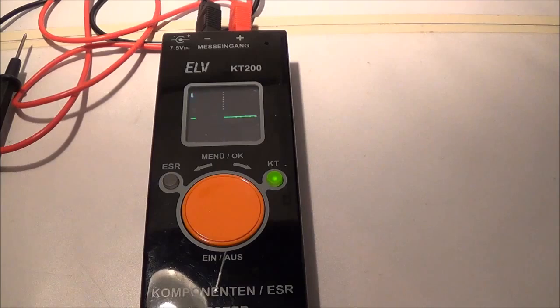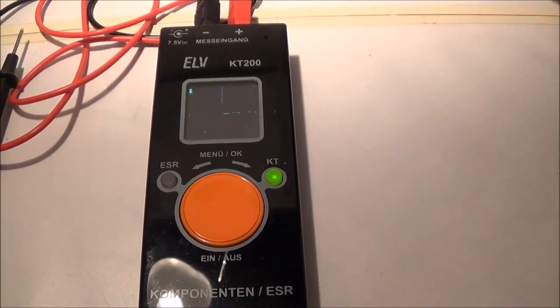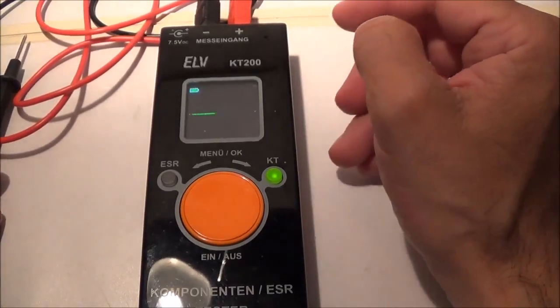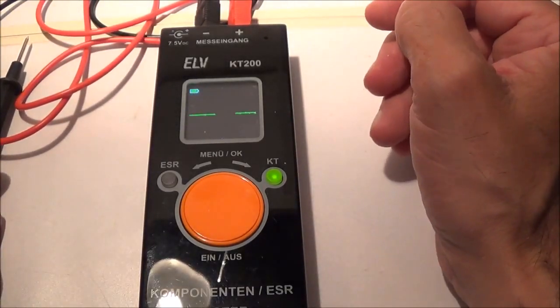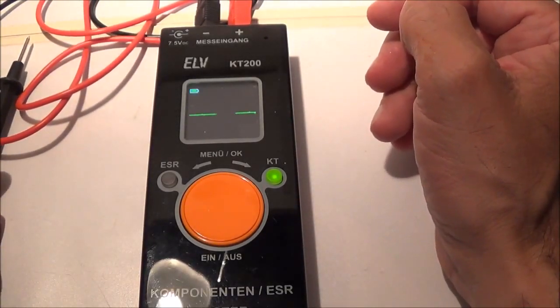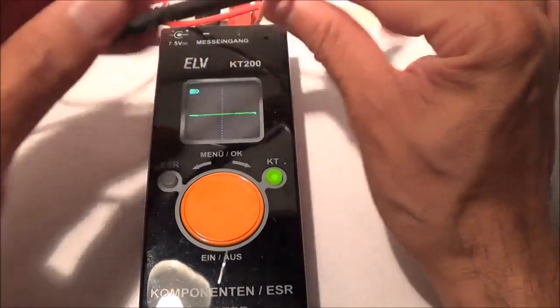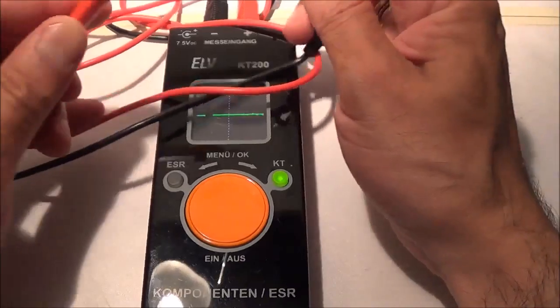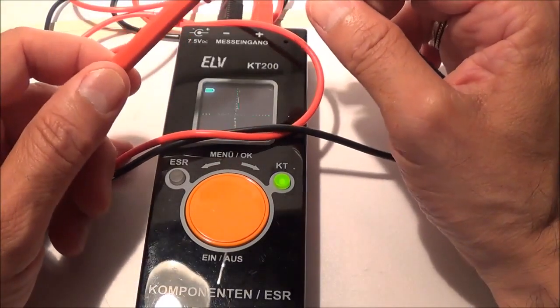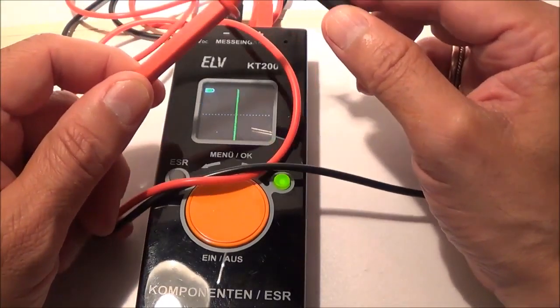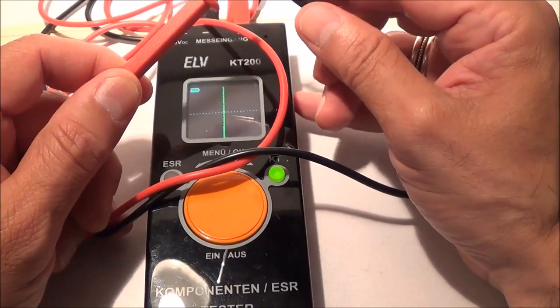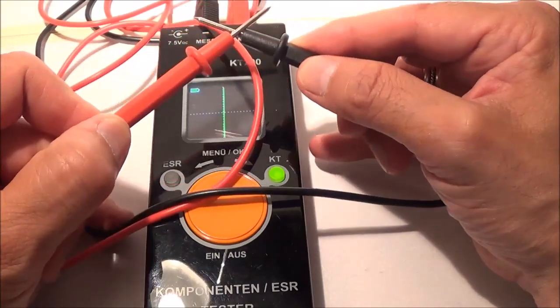I'm going to start with the basics here now. What you're seeing here is a straight horizontal line, and that means it's an open. When I short the leads together, it's showing a short. Now you'll have a vertical line straight up and down.